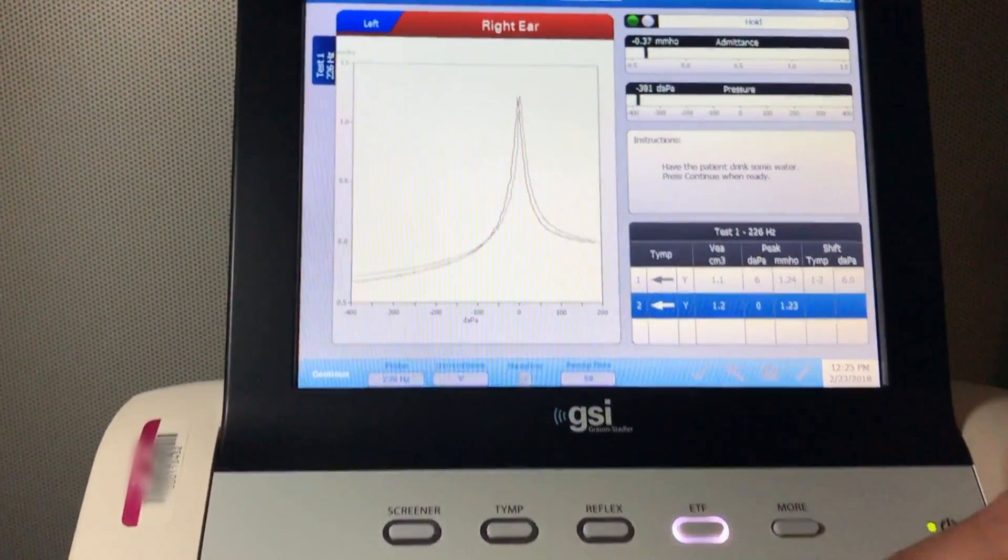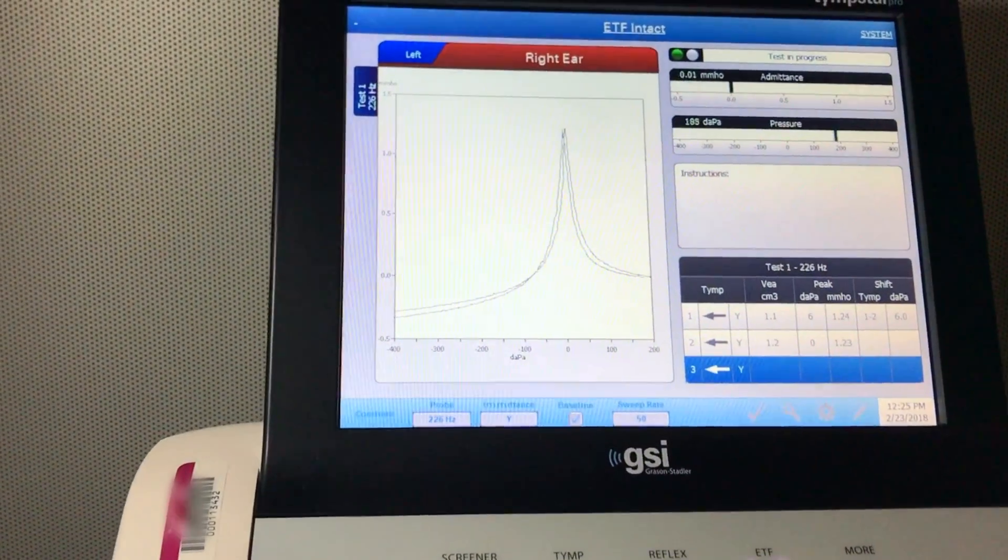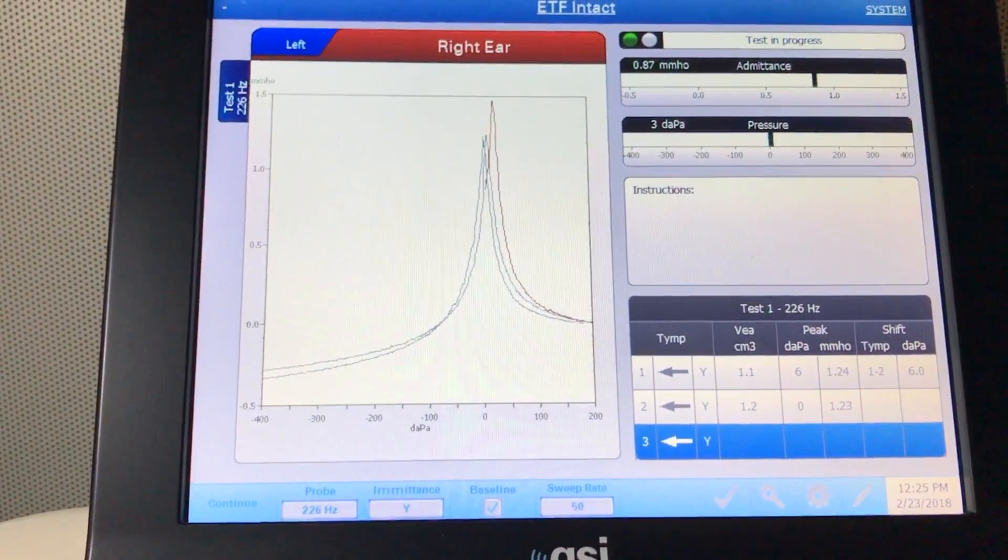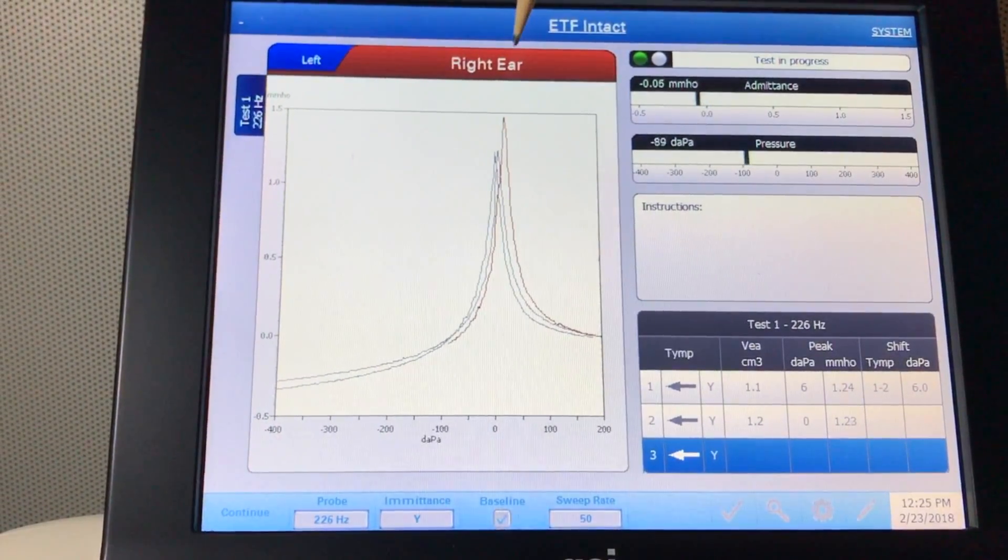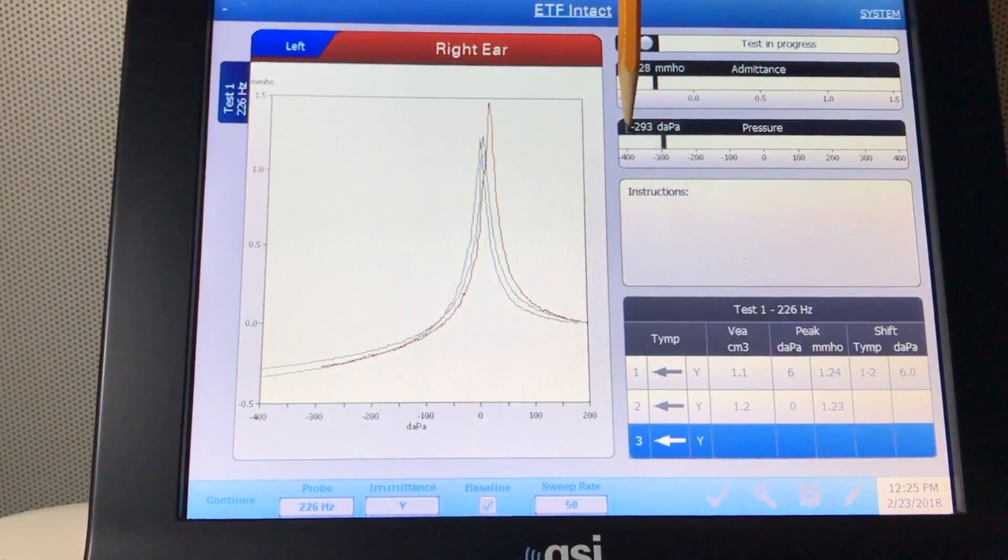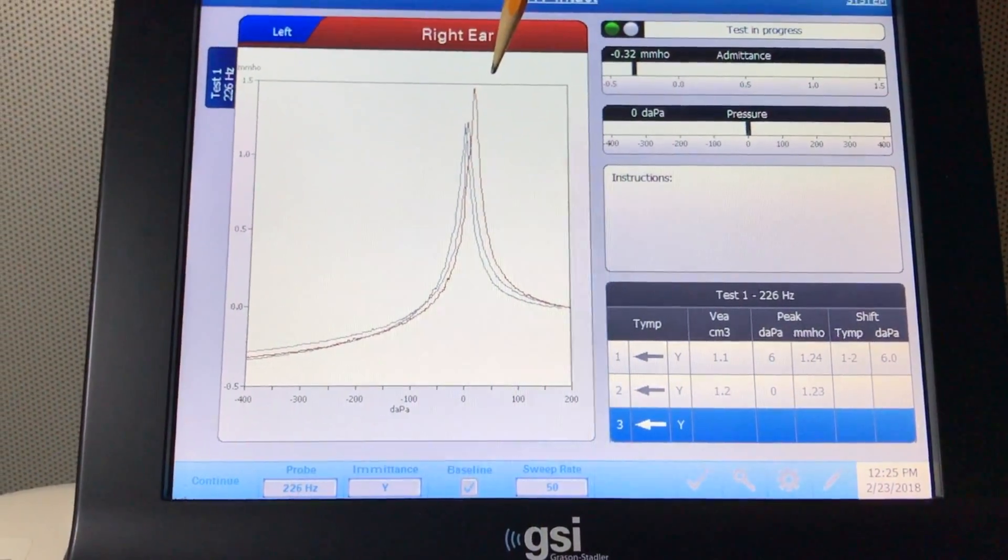So repeat it again. Get the third baseline tympanogram. As you can see now, the peak is shifted to the positive side. By creating a negative middle ear pressure and having the patient drink some water, it shifts the middle ear pressure to the positive side. So you have three peaks.